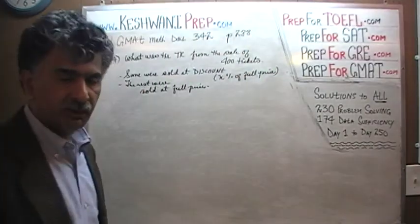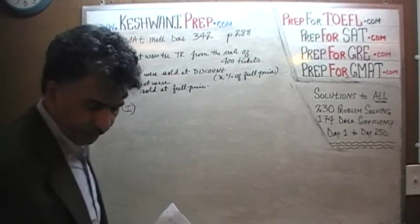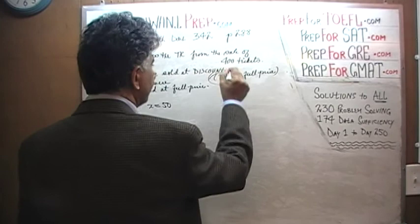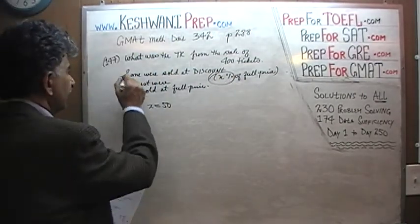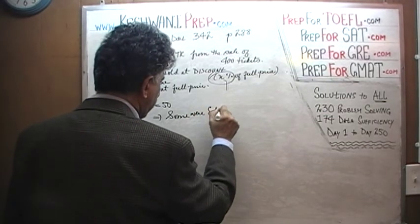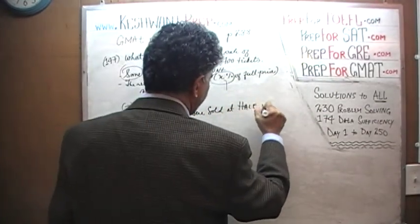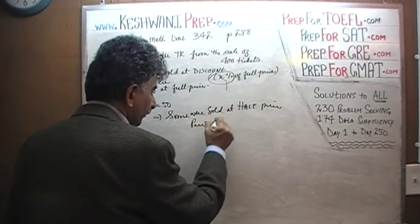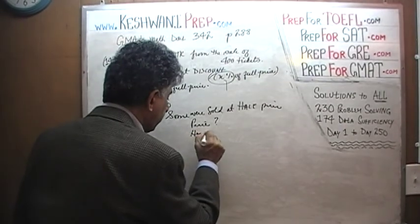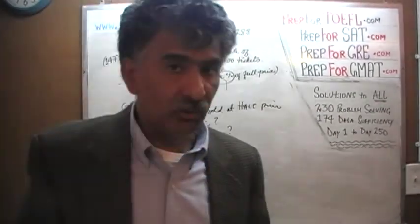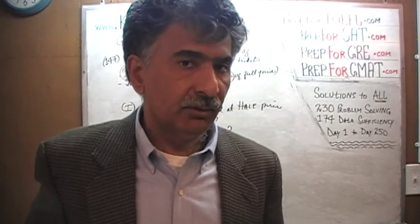We don't actually have to calculate it. Let's look at statement 1. In statement 1, they tell us that X equals 50. Now remember, X is the rate of discount. So what this tells us is that some were sold at half price. And that's all we know. Some were sold at half price but what was the full price? We still do not know what the full price is, and we do not know how many were sold at full price or how many were sold at the discount. Simply knowing that some tickets were sold at half the original price does not enable us to figure out what the total revenue was from the sale of these 400 tickets. So the first statement is not enough.